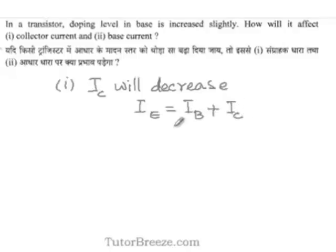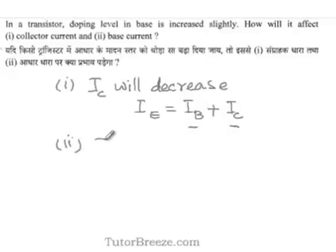Now, if the doping level of the base is increased slightly, then the base current will increase. So, if the base current increases, the collector current is going to decrease. The base current will increase on increasing the doping.